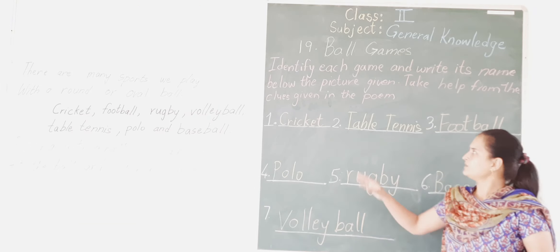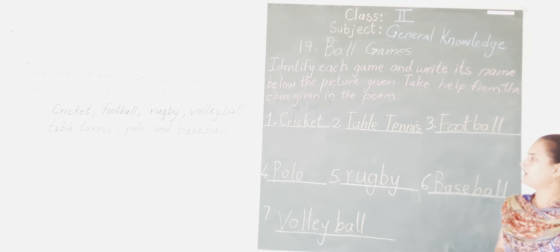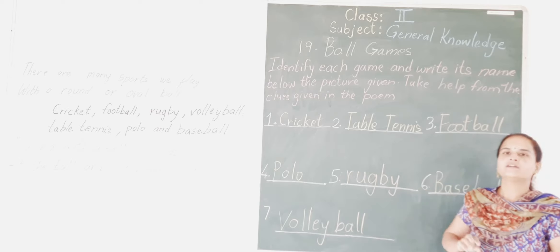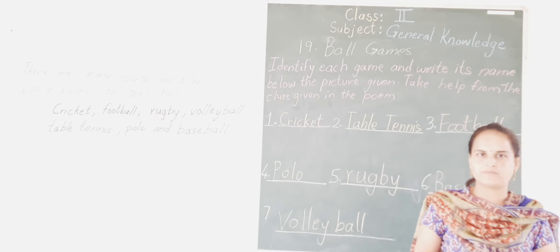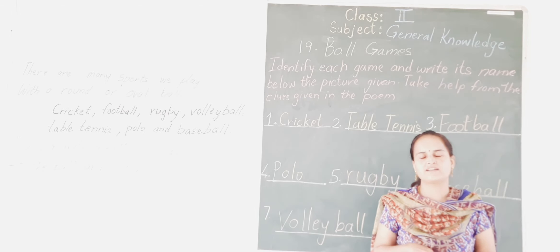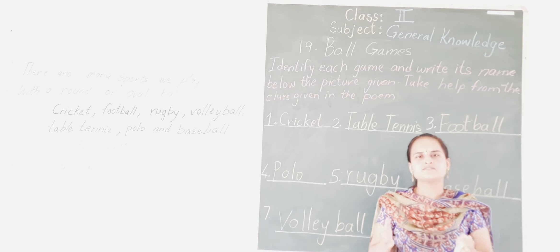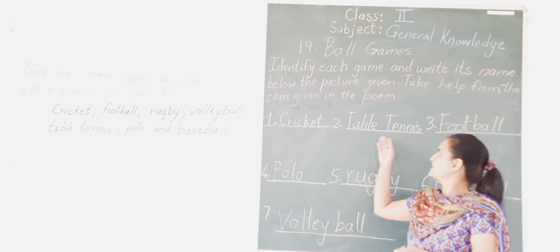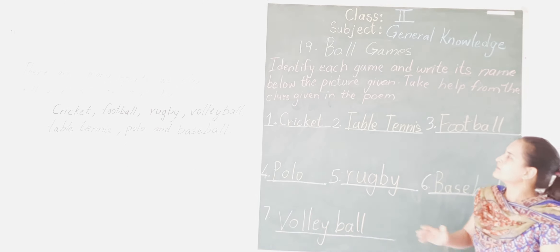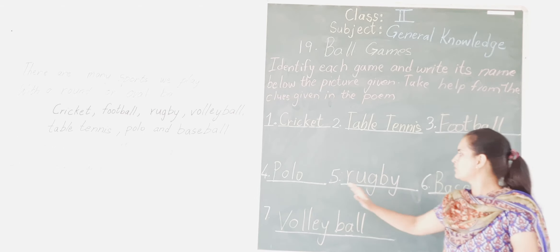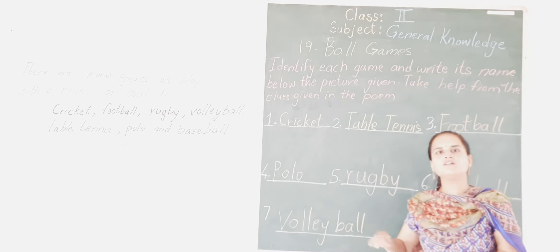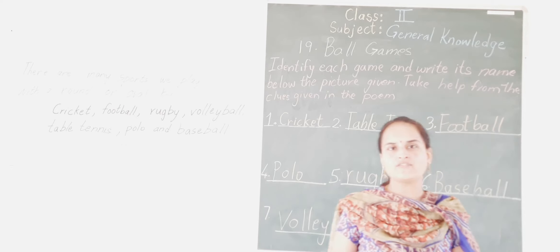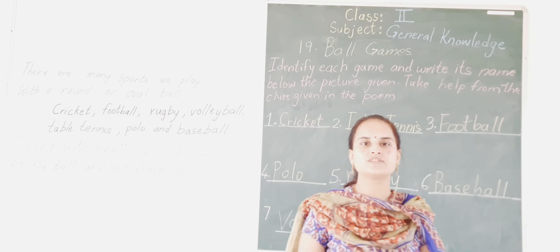All these games which we have seen are outdoor games, except table tennis. Table tennis is an indoor game — it is played inside the house or a room. But cricket, football, polo, rugby, baseball, and volleyball are all outdoor games. You have to remember the names of these ball games and identify their pictures.